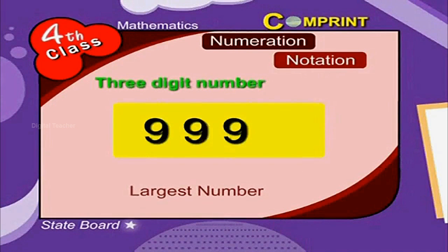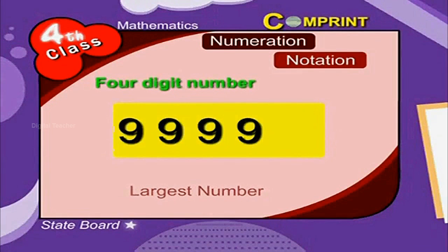The largest 3 digit number is 999. The largest 4 digit number is 9999.